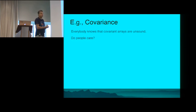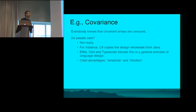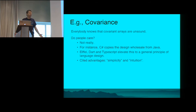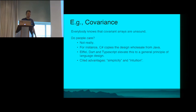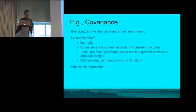Let me explain the feedback loop with an example. Covariance has been with us for a long time. One well-known case is covariant arrays in Java, which are known to be unsound. But do people care? C# knew about the unsoundness issues but copied the design wholesale from Java. Languages like Eiffel, Dart, and TypeScript elevate covariance to a general principle of language design, citing simplicity and intuition — naive programmers usually think everything should be covariant.